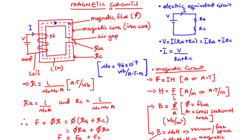In today's video, we are going to learn the basic concepts of magnetic circuits. A magnetic circuit is made up of a closed path to which a magnetic field, represented as lines of magnetic flux, is confined.